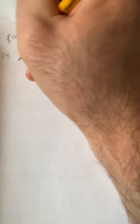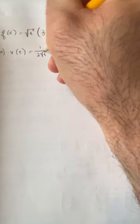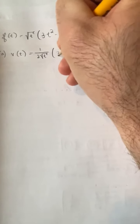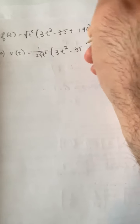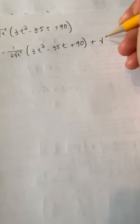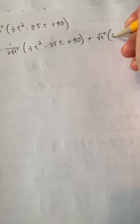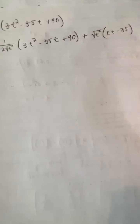So for part a, our velocity function is the first derivative again. So v of t is going to equal: first, the derivative of the first times the original second function — that's 1 over 2 radical t times 3t squared minus 35t plus 90 — plus radical t times the derivative of the second, which is 6t minus 35.